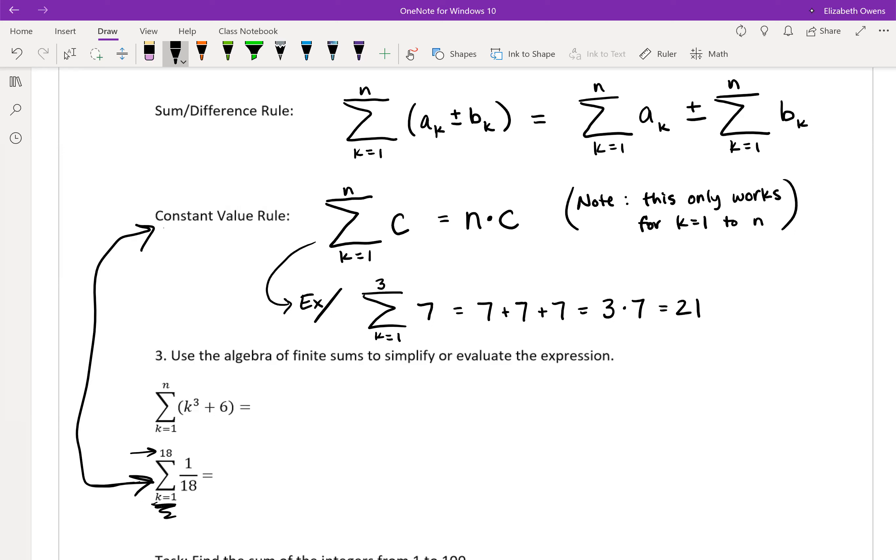It's going from k equals 1 to an n value of 18. And so we're adding together 1/18, 18 times essentially there.